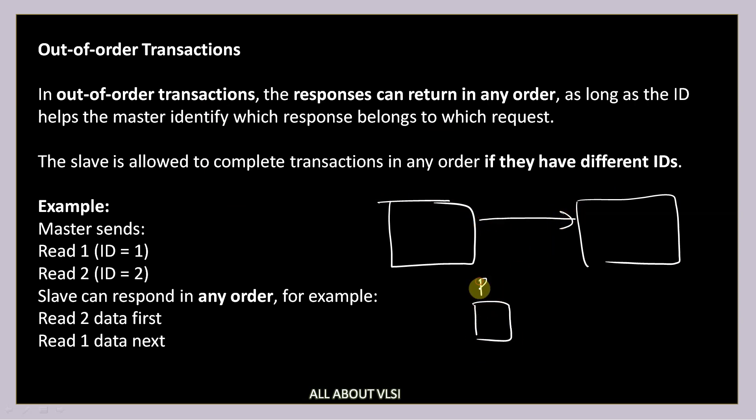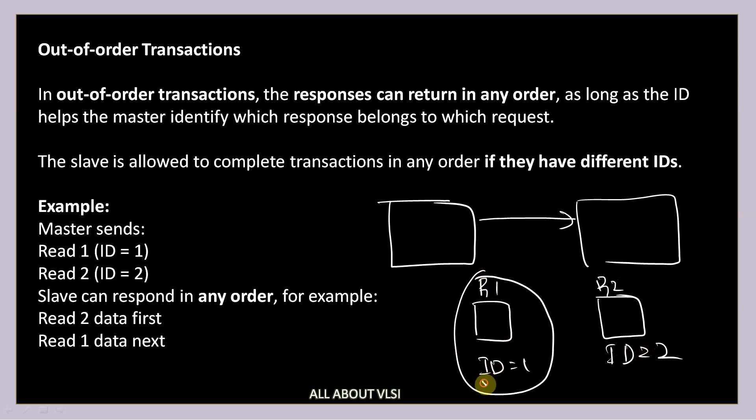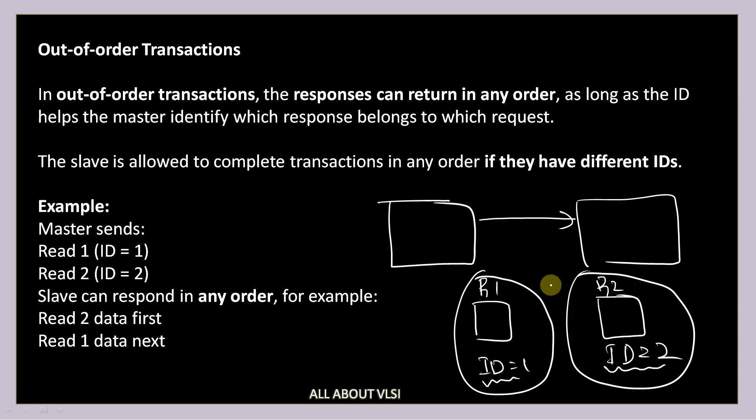Out-of-order transactions allow responses to be returned in any order, as long as the ID helps the master identify which response belongs to which request. For example, if the master issues read transfer 1 with ID=1 and read transfer 2 with ID=2, the slave may respond with transaction 2's data first, then transaction 1's data.